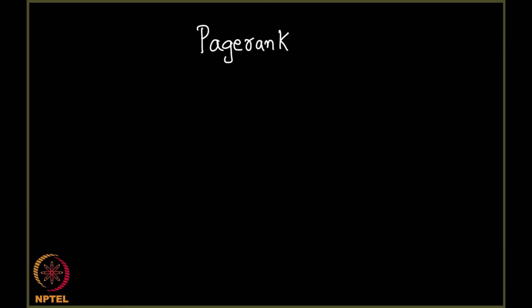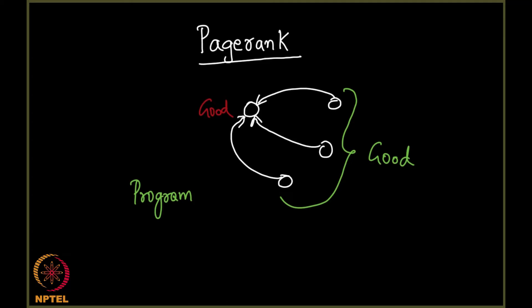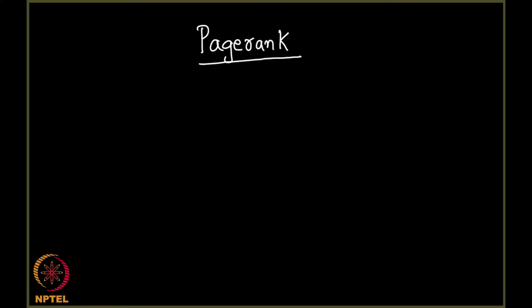We have been discussing PageRank all this while, and we will see it in a brand new light. If you can recollect, I told you what exactly PageRank does — it is all about what you are is decided by who your friends are. If good people point to you, it means that you are good. We saw a whole lot of programming screencasts where we showed you exactly how PageRank is computed, and why it is done that way will be our focus in this lecture and the forthcoming lectures.